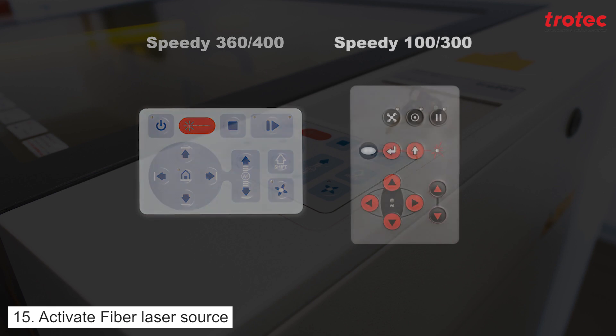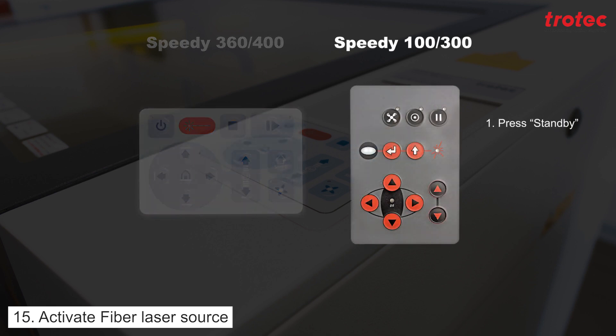For the speedy 100 or 300 press the standby button here. Then press the y-axis arrows simultaneously.